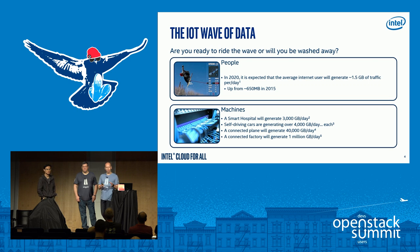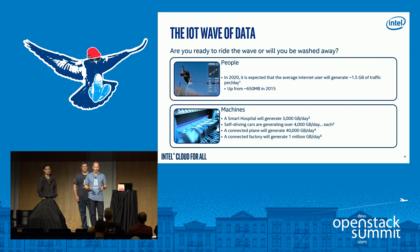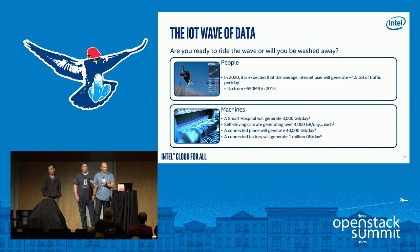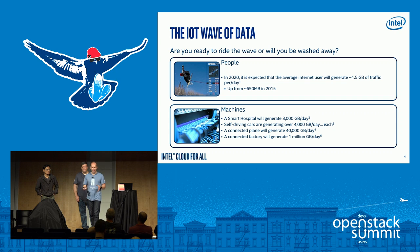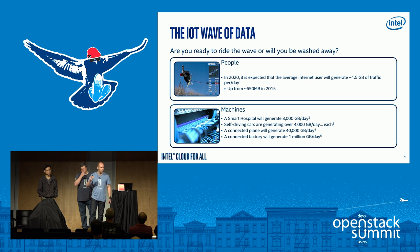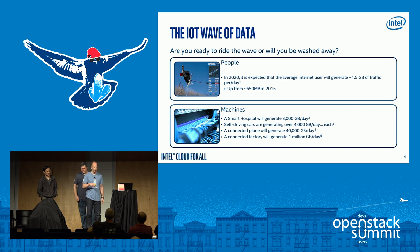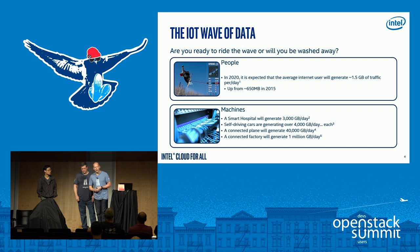Looking at where we're going: a gigabyte and a half of internet traffic a day per person might not sound so big, but thinking about how much data is coming from people on average is quite a lot — up from 650 megabytes last year. Now let's look at machines. Smart hospitals will generate 3,000 gigabytes a day. Self-driving cars are basically a data center on wheels, requiring detailed analytics for hazard detection and processing at the edge versus in the cloud. Connected planes have numerous sensors.